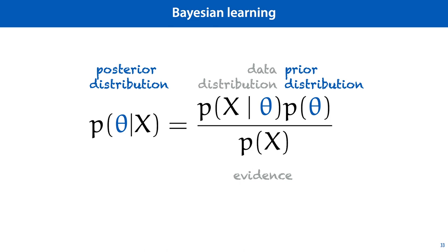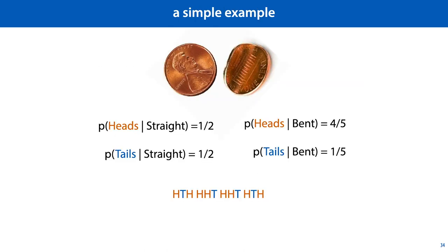To illustrate both of these approaches, let's look at a simple example. We have two coins, a bent one and a straight one. Flipping these coins gives us different probabilities of heads and tails.